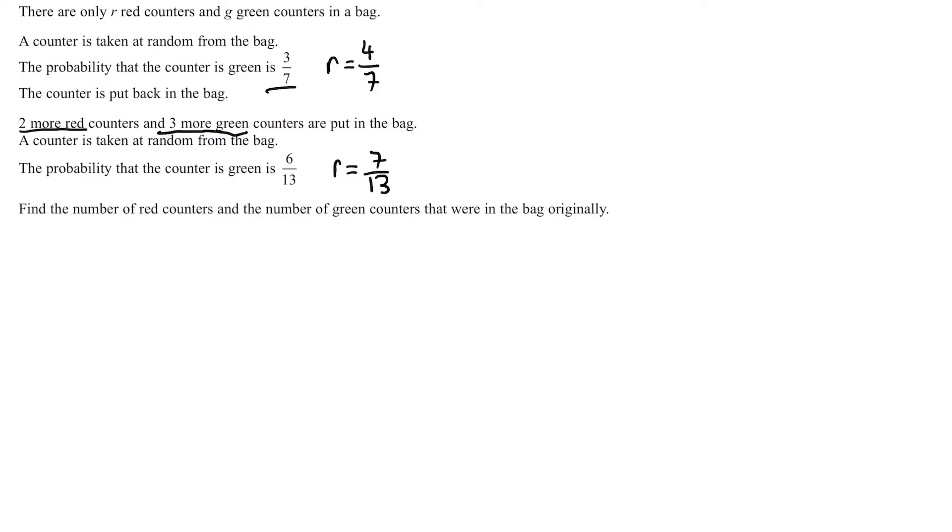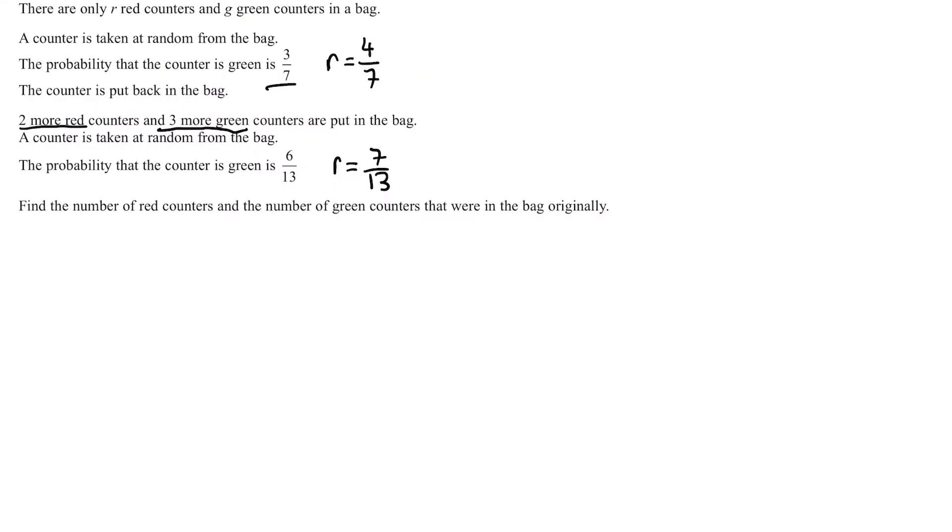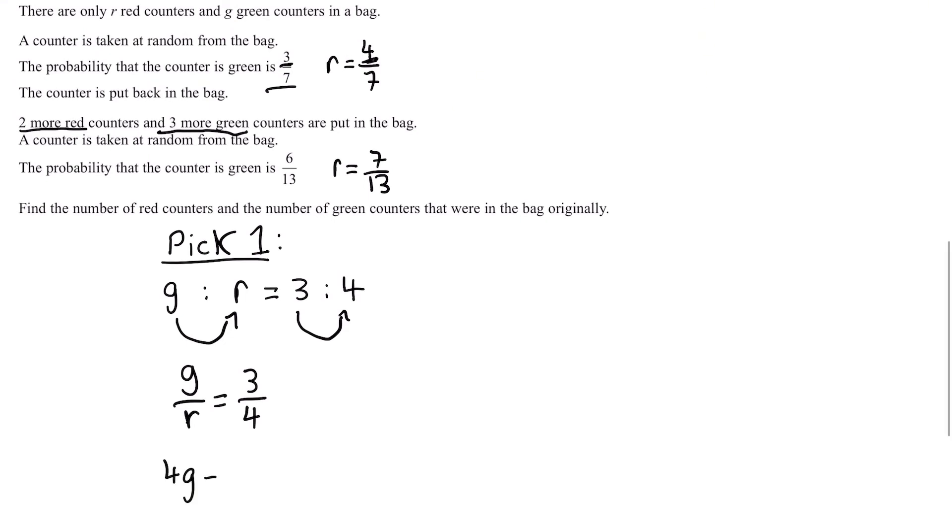Looking at a question like this, you see probability, you might think let's do a probability tree. However, there's a much better way. We need to look at these fractions in terms of ratios. Let's look at the first pick. At this point, the ratio of green to red is equal to 3 to 4. When you have ratios like this, you can turn this into a fraction by dividing these by each other. So g/r equals 3/4. We can multiply by r and 4, so we have 4g equals 3r. Here's our first equation.